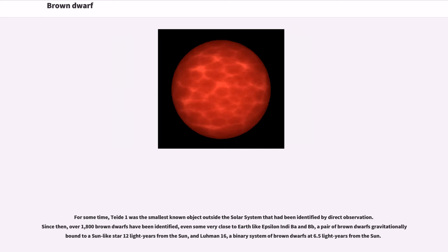For some time, Teide 1 was the smallest known object outside the solar system that had been identified by direct observation. Since then, over 1,800 brown dwarfs have been identified, even some very close to Earth like Epsilon Indi Ba and Bb, a pair of brown dwarfs gravitationally bound to a sun-like star 12 light years from the sun, and Luhman 16, a binary system of brown dwarfs at 6.5 light years from the sun.